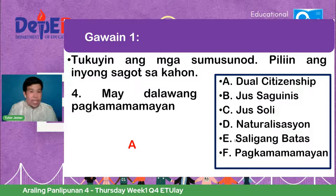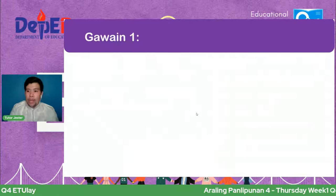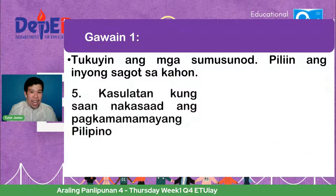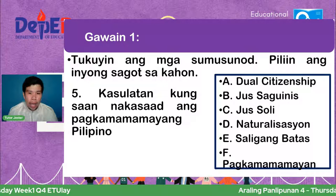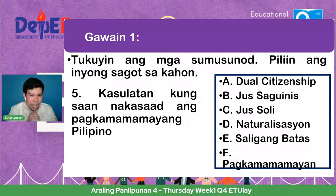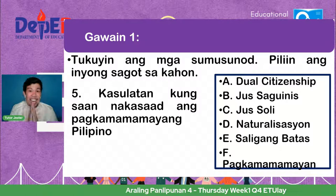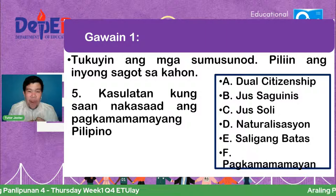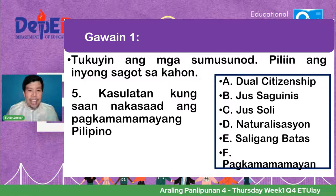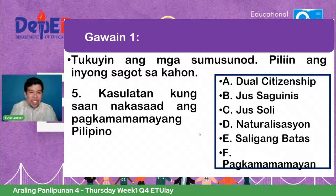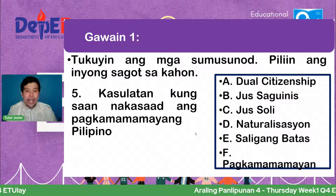Number five: saan nakasaad ang pagkamamamayang Pilipino? Ayon kina Sharabel, Alexander, Ayesha, Kandink, at Ian — ang tamang sagot ay letter E — saligang batas. Tama ang kasagutan ng lahat. Very good, learners!